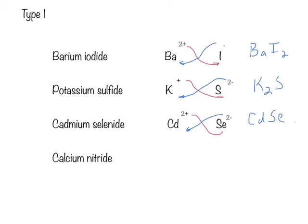Our final example problem, we have calcium nitride. Calcium is a plus 2 ion, and nitride is a minus 3 ion. I'm going to take the superscript of one and make it the subscript of the other. We end with Ca3N2.